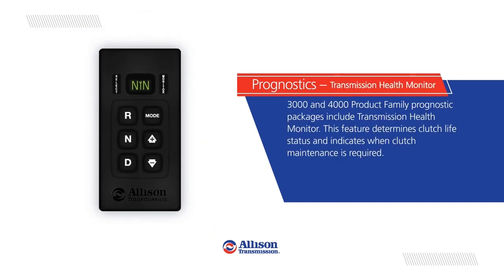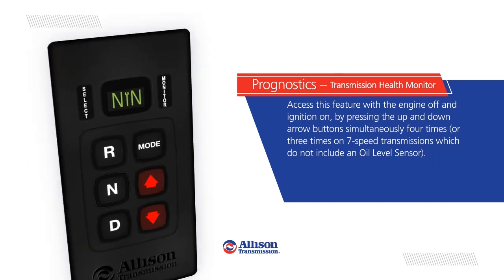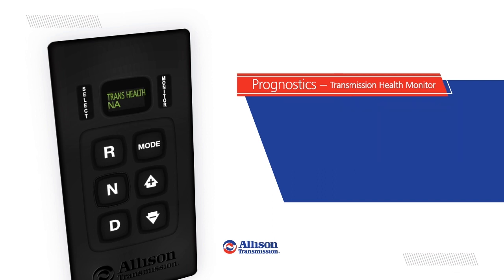Transmission Health Monitor: 3,000 and 4,000 product family prognostic packages include the Transmission Health Monitor. This feature determines clutch life status and indicates when clutch maintenance is required. Access this feature with the engine off and ignition on by pressing the up and down arrow button simultaneously four times, or three times on seven-speed transmissions which do not include an oil level sensor. An acceptable clutch life status is displayed as TransHealth OK; an unacceptable status is displayed as TransHealth Low. TransHealth NA appears if transmission shifts have not adapted. Exit the Transmission Health Monitor by pressing the neutral button.